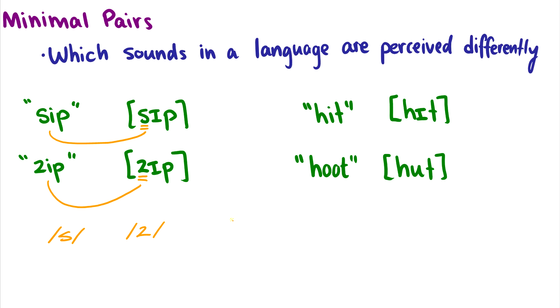But of course, this works with vowels too. For instance, with hit and hoot, the only difference between these two are the vowels I and oo. So because these two words form a minimal pair, we can say that I and oo are different sounds in English. In other words, we perceive them differently.